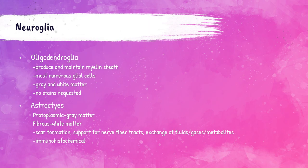Oligodendroglia are small cells that help produce and maintain the myelin sheath. Out of all the neural glial cells, these are present in the highest amount. They are found in both gray matter and white matter — gray matter is composed mainly of nerve cell bodies, while white matter is composed mainly of myelinated nerve fibers. We do not typically stain this type of glial cell.